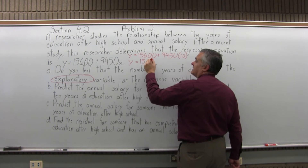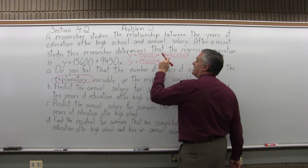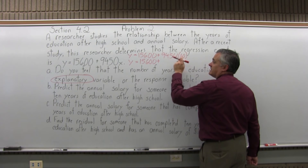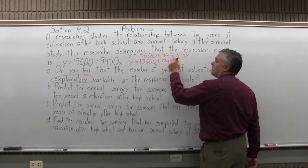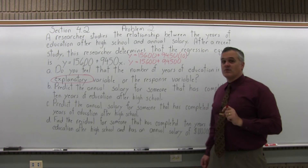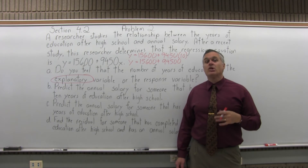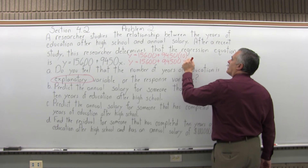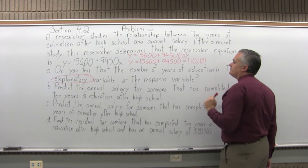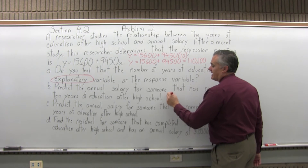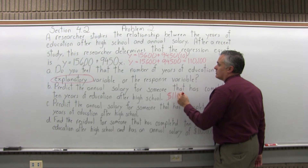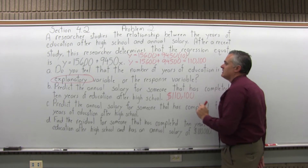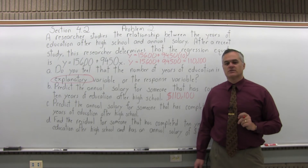I'm going to leave the 15,600 plus for a minute and first do 9,450 times 10. The times 10 just puts one extra zero on the end, giving 94,500. So now I figure out 15,600 plus 94,500, which comes out to 110,100. That's the predicted annual salary for somebody who completes 10 years of education beyond high school.